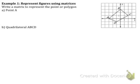Example one: write a matrix to represent a point or a polygon. We are going to represent point A in a matrix. Point A on the graph — I highlighted it right there in purple — point A is negative three, zero. That is what point A is on this coordinate plane.